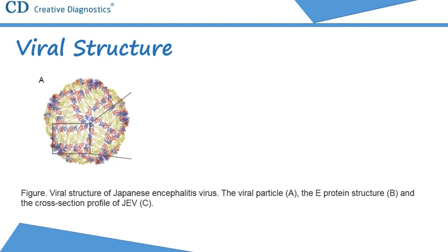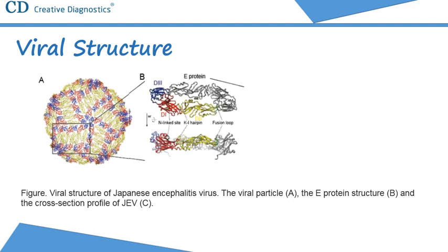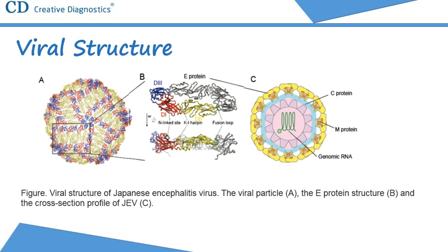Japanese encephalitis virus is an enveloped virus about 50 nm in diameter with a single-stranded, plus sense RNA genome of approximately 11 kilobases in length. The genome has one open reading frame encoding for a single polyprotein, which is cleaved into three structural proteins — capsid C, precursor to membrane, and envelope E — and seven non-structural proteins: NS1, NS2A, NS2B, NS3, NS4A, NS4B, and NS5, by viral proteases and host signalases post-translationally. The E protein is the main target of neutralizing antibodies and contains a cellular receptor binding site and fusion peptide.